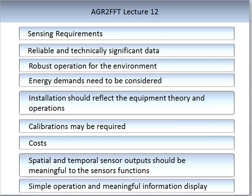Spatial considerations refer to how a sensor collects data over a physical space — over the paddock or the whole farm. Temporal considerations are how often a sensor collects data. Both should be meaningful to the sensor's functionality. Too high a temporal frequency — collecting data every second when you only need it every hour — will result in a large build-up of data that is costly from both a power and communication perspective.